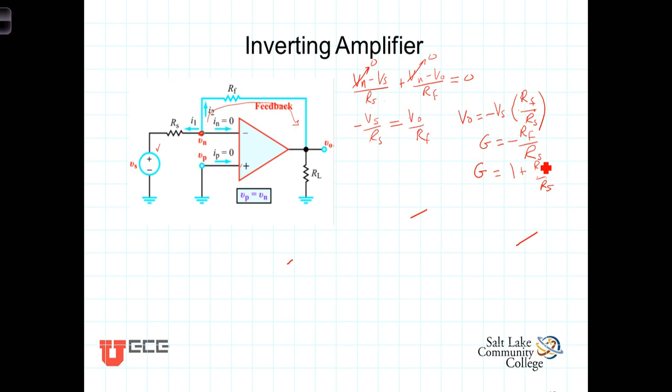When you compare these two terms, you'll notice they're very similar. They both have the ratio R sub f over R sub s, but in the non-inverting case, there's also one added to it. So for the same circuit, the gain if the source was on the non-inverting terminal would be one larger than the gain experienced when the source is on the inverting terminal.